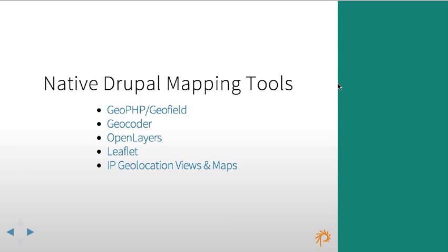The idea behind GeoCoder is that you give it a string and it uses some mechanism to figure out where that is on a map — giving you the coordinates. So if I say Chicago, Illinois, it'll give me 41 north and negative 86-ish. I used to give this presentation a lot in Chicago.